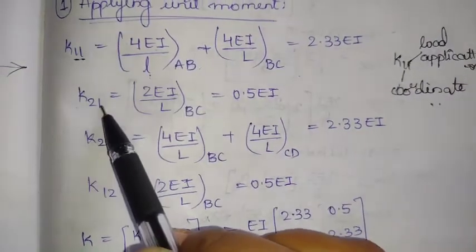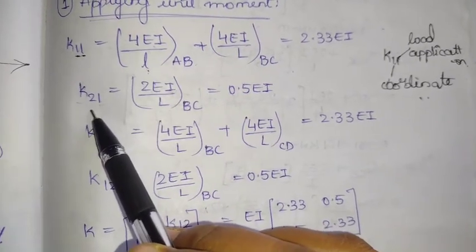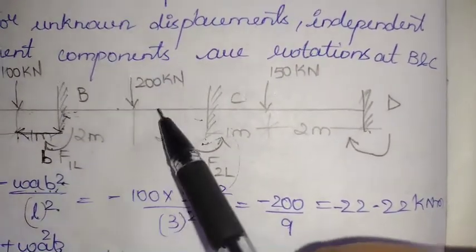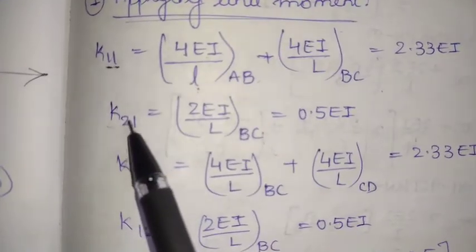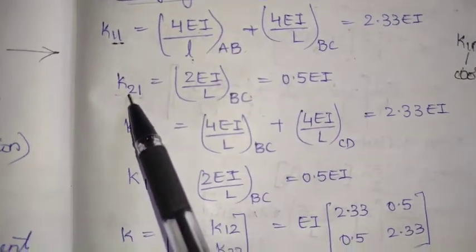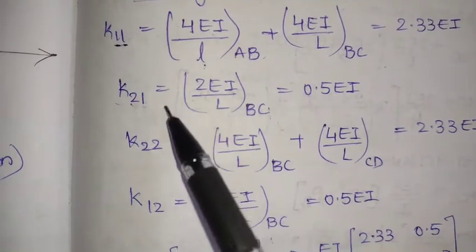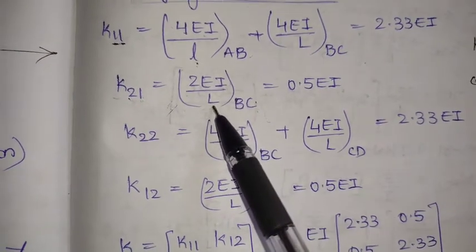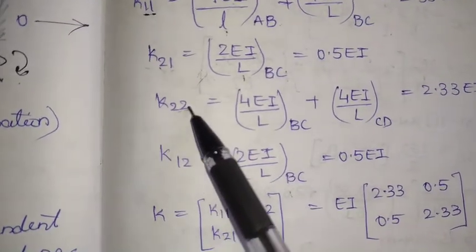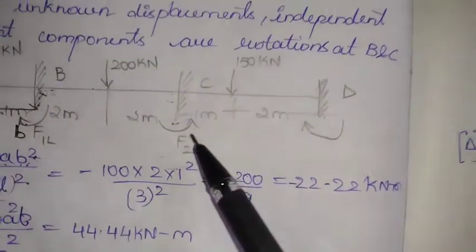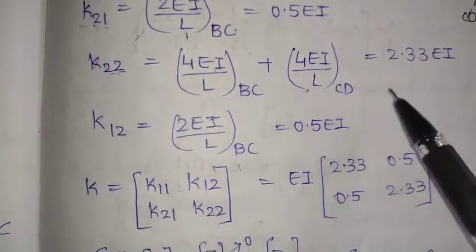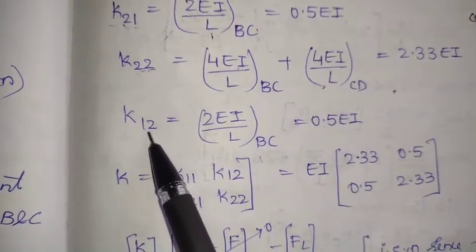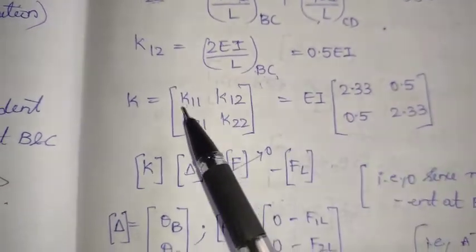For K21, the load is applied at coordinate 1 but measured at coordinate 2. Since joints 1 and 2 are connected only by member BC, we take only the BC span and apply the carry-over factor, giving K21 = 2EI/L. For K22, both coordinates are at joint C between spans BC and CD, so K22 = 4EI/L for each span summed. For K12, similarly only the BC member connects them, so K12 = 2EI/L.